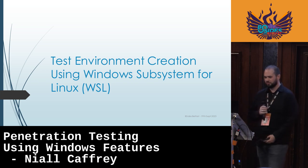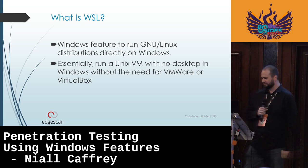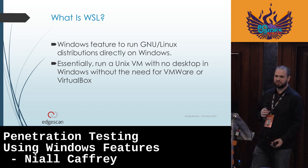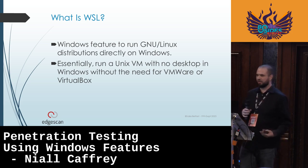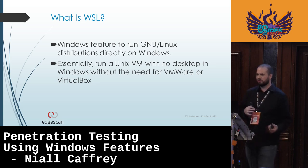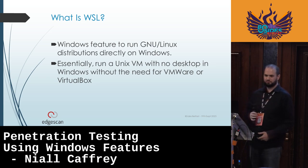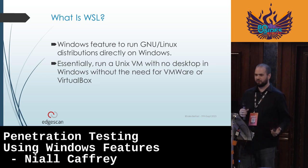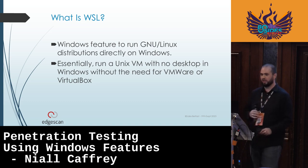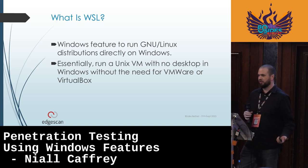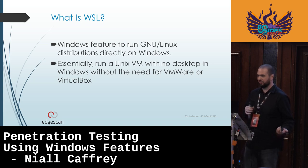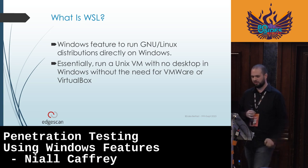So first up, Windows Subsystem for Linux. What is it? It was first released back in about 2016 by Microsoft. At first it was really just a way to emulate Linux binaries on Windows — you couldn't do much with it for pen testing or network testing. But about two or three years later, they released WSL 2, which is a full virtual machine. You can run most popular GNU/Linux distributions directly in Windows without needing to install VirtualBox, VMware, or any other virtualization software.